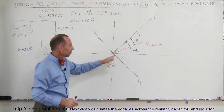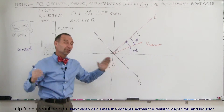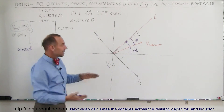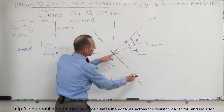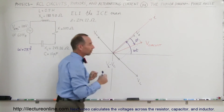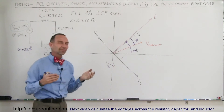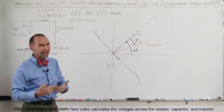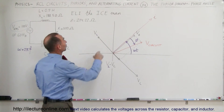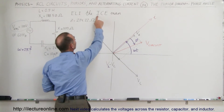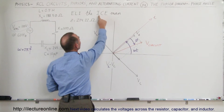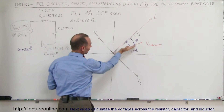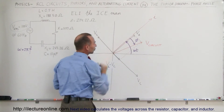Since the voltage across the capacitor is larger than the voltage across the inductor, you would expect the capacitor reactance to be bigger than the inductive reactance, and so this whole circuit acts more like a capacitive circuit. In a capacitive circuit, the current will lead the voltage — the current is ahead of the voltage.